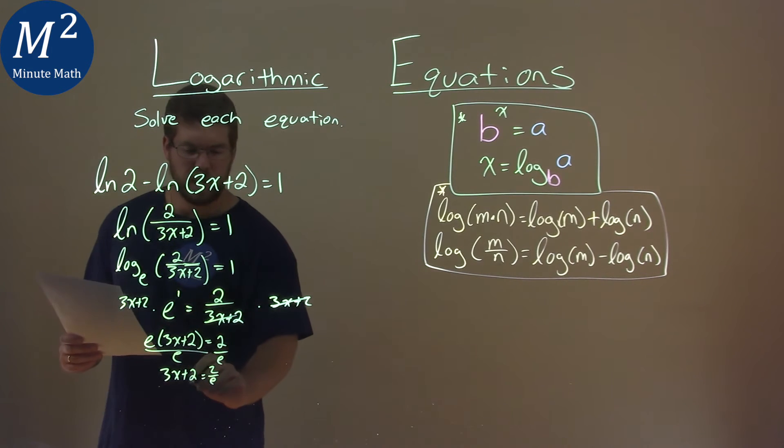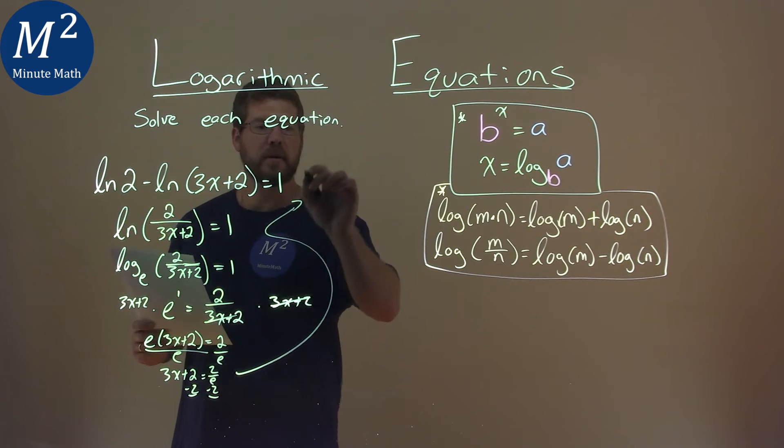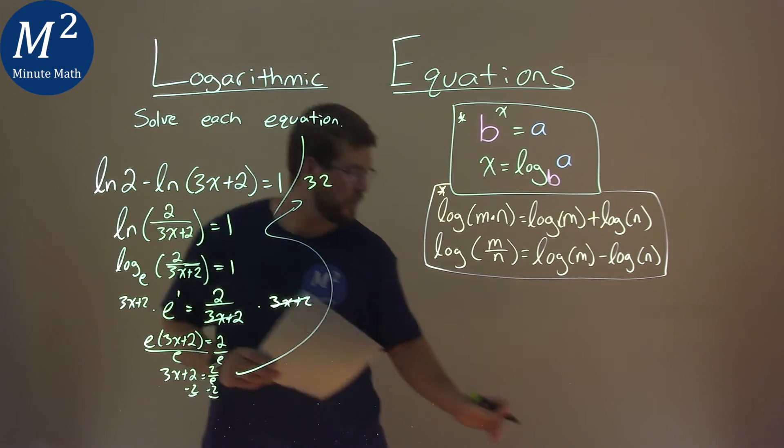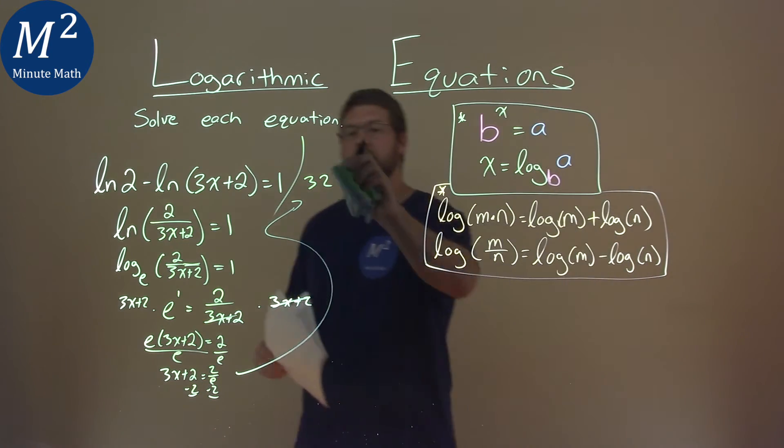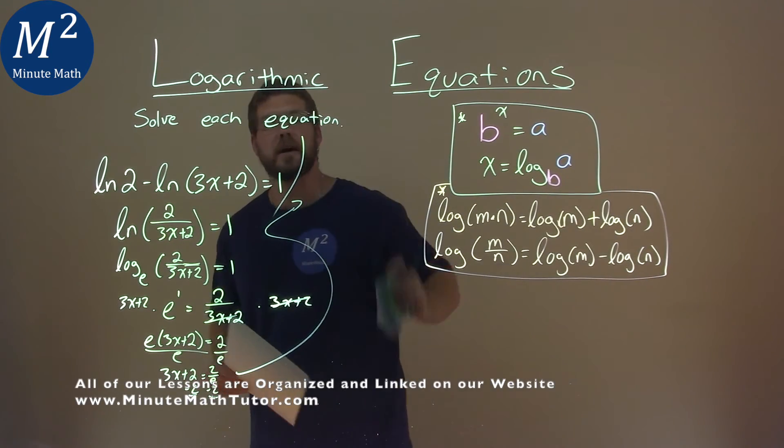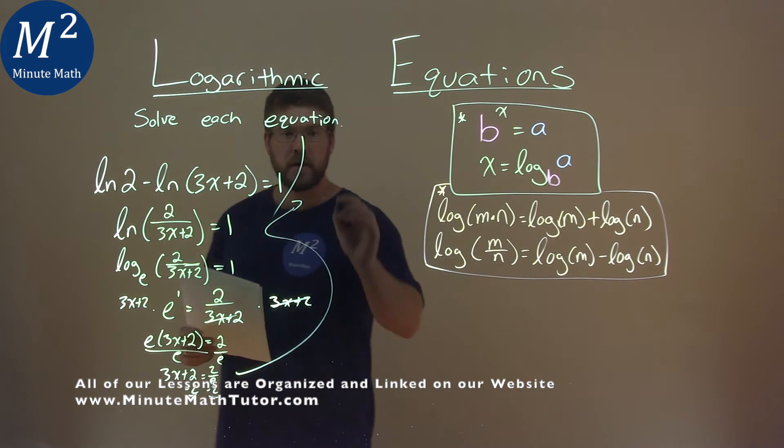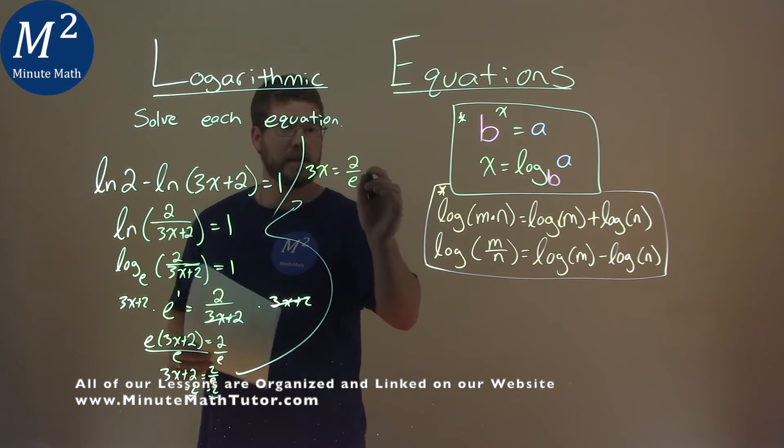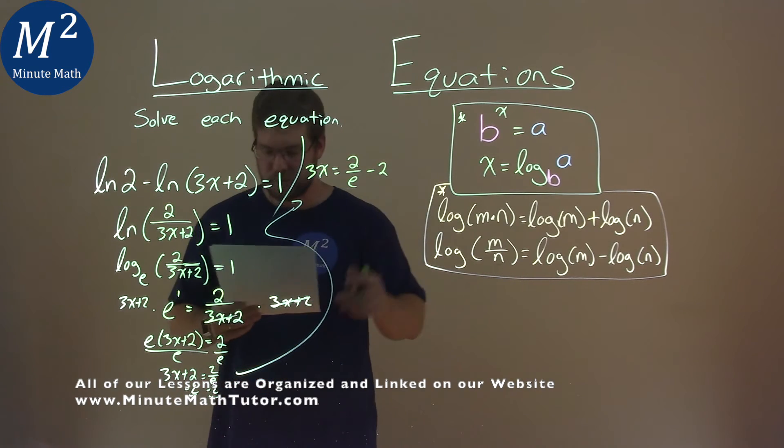Okay, almost there. Let's subtract the 2 to both sides. What do we get? I'm going to put that up here. Let's get some space here. So we have 3x. I wrote a 2, getting ahead of myself here. It's all right. Take our time. No need to rush this. 3x is equal to now 2 over e and that's minus a 2.